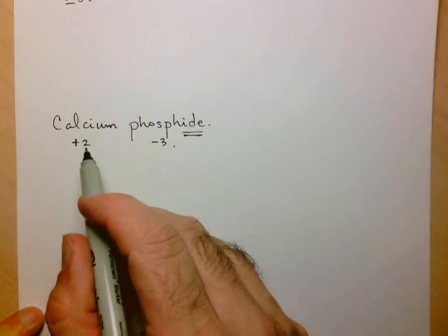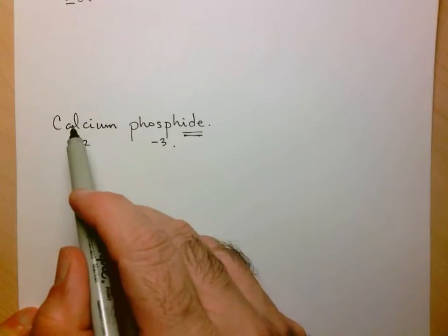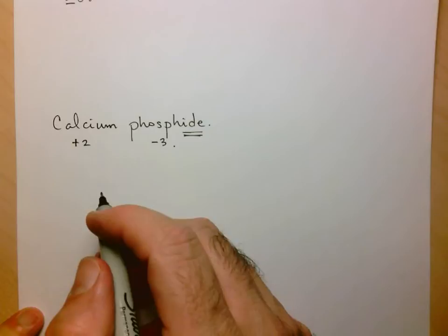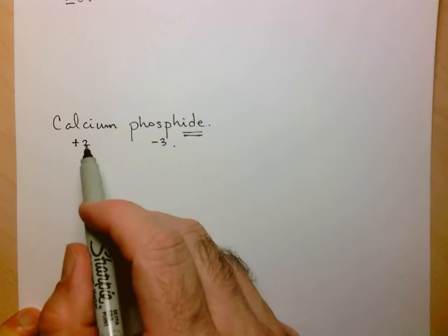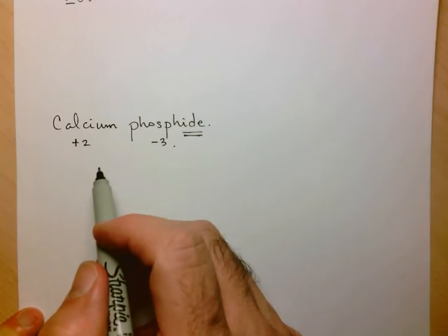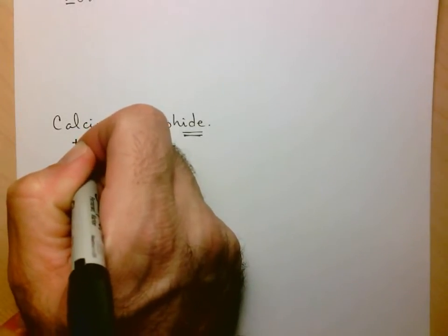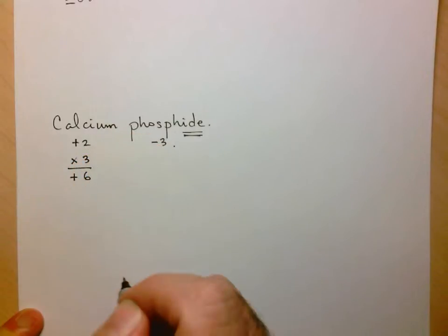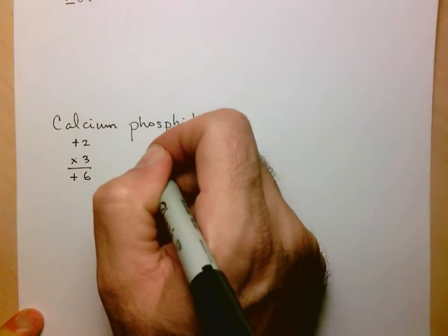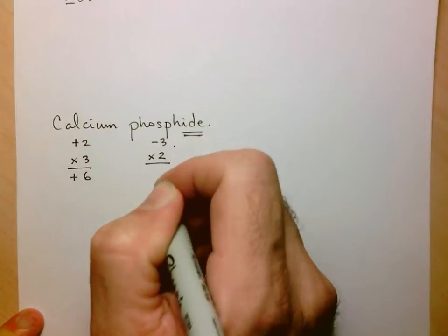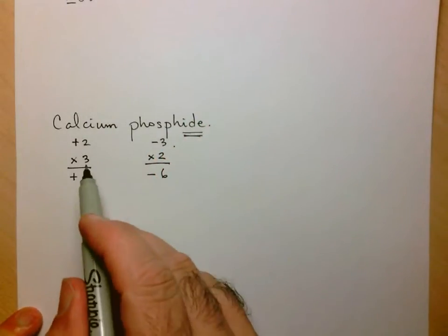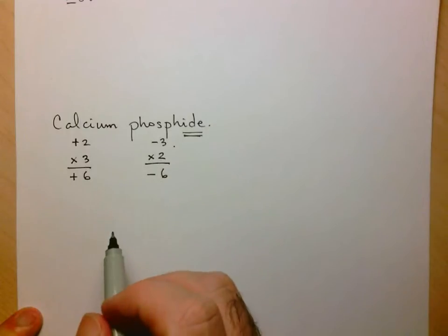We need a combination that is neutral. If we took one of each, plus two and minus three is not neutral. We're looking for the lowest common multiple between these two numbers, which would be six. That means we need three calciums to get a total charge of plus six, and two phosphides to get a total charge of minus six. Three calcium, two phosphide.